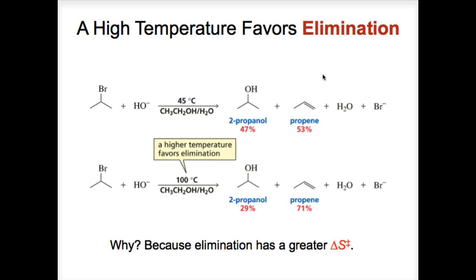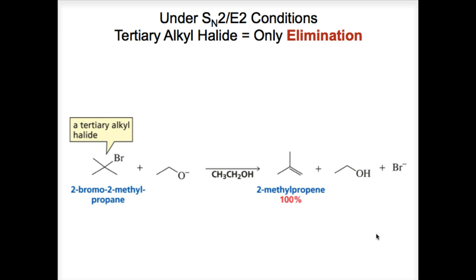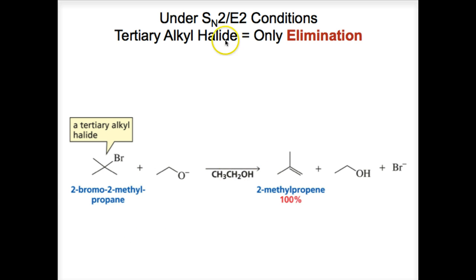Higher temperature also favors elimination because of the greater entropy change for the elimination reaction, since elimination forms more product molecules than substitution — elimination forms three products: the alkene, the leaving group, and the conjugate acid of the base, while substitution forms two: the substitution product and the leaving group. Tertiary alkyl halide is the least reactive in SN2 and the most reactive in E2, so only the elimination product is formed when a tertiary alkyl halide reacts under SN2/E2 conditions.